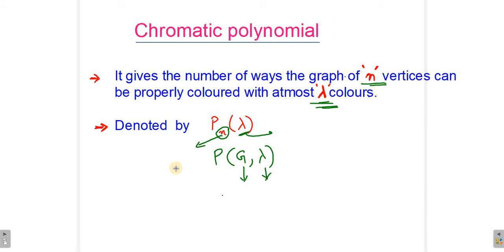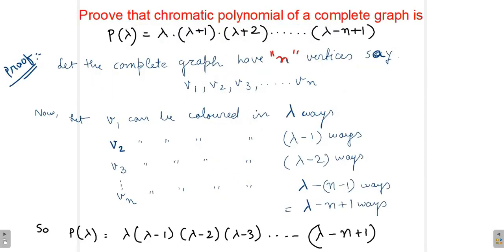So let's go ahead and see how we can prove that the chromatic polynomial of a complete graph is lambda times lambda minus 1 times lambda minus 2 times lambda minus n plus 1, where lambda is the number of colors that we have and n is the number of vertices.